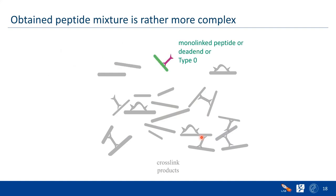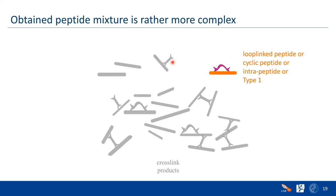We also have monolink peptides — these are type zero, where the cross-linker has one arm attached to the peptide and the other arm remains unreactive. In mass spectrometry we measure mass changes, and we know the corresponding mass shift for each cross-linker. For DSS, the monolink gives us a 156 Dalton difference. There could also be loop-linked peptides, where a cross-linker has both arms attached to the same single peptide. The mass shift is a bit less because the second arm is also linked.